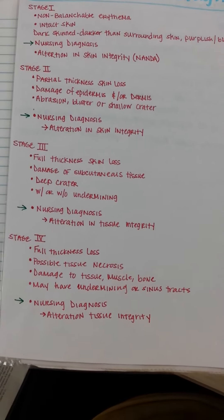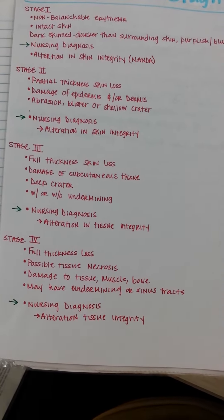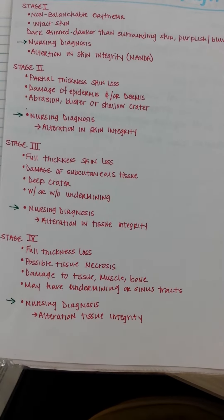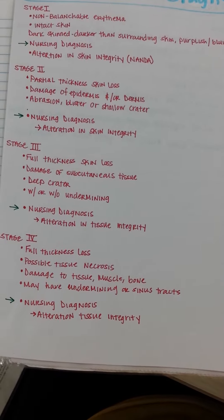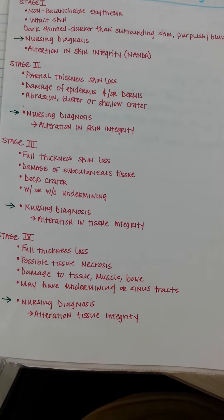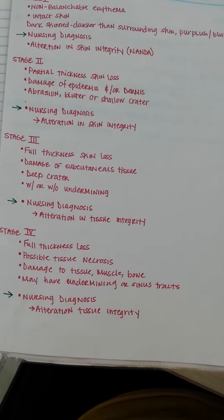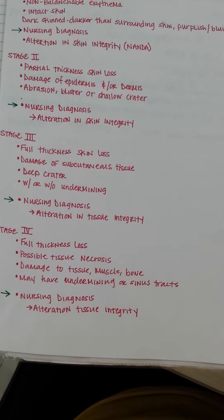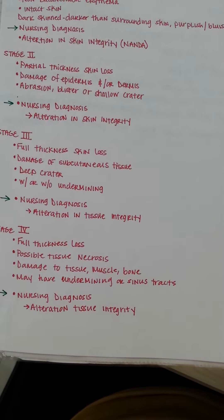Stage 3: full thickness tissue loss with damage to or necrosis of subcutaneous tissue. The ulcer may extend down to but not through the underlying fascia. The ulcer appears as a deep crater with or without undermining of adjacent tissue and without exposed muscle or bone.